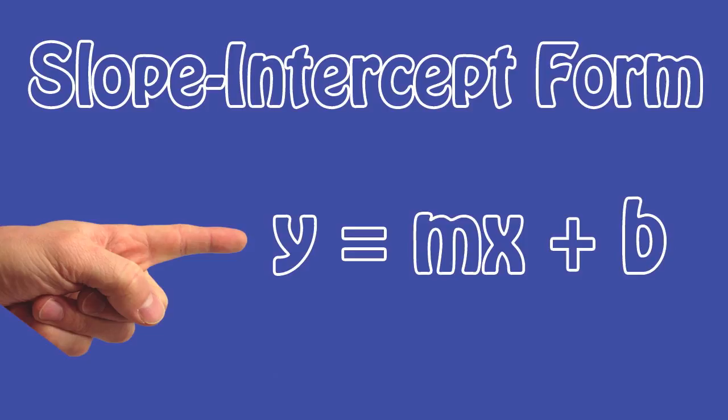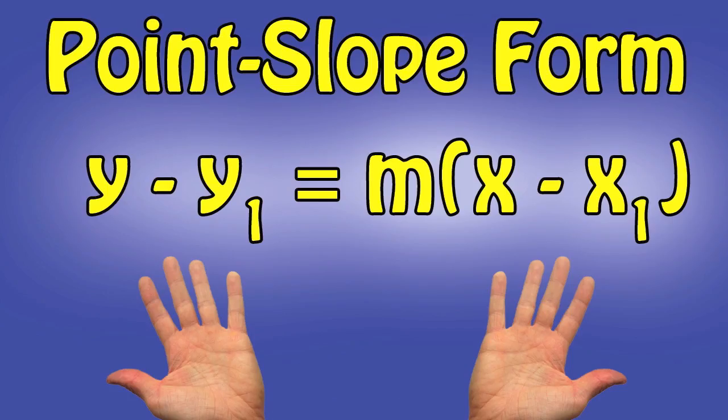Y equals mX plus B, point-slope form. Y minus Y₁ equals m times X minus X₁.